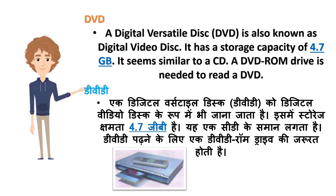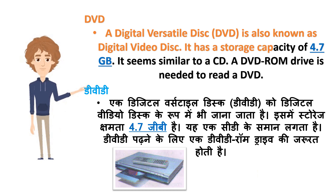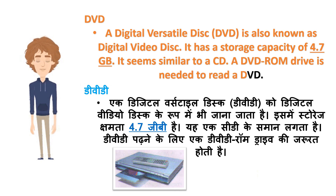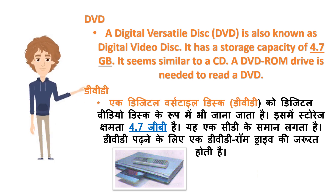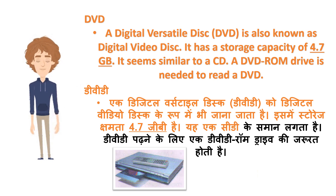DVD: A digital versatile disk (DVD) is also known as digital video disk. It has a storage capacity of 4.7GB. It looks similar to a CD. A DVD-ROM drive is needed to read a DVD. DVD ko digital video disk ke roop mein bhi jana jata hai. Isme storage kshamta 4.7GB hai. Yeh ek CD ke samaan lagta hai. DVD padhne ke liye ek DVD-ROM drive ki zaroorat hoti hai.